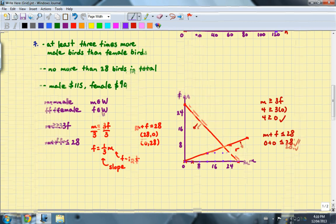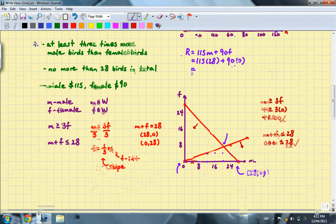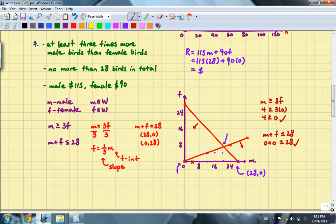And finally, it asks for the combination that would have maximized the pet store's revenue. You obviously want to sell as many of the male birds as you can possibly sell. So you have three corners, one here, one here, and one here. And the only one that really maximizes the number of male birds sold is this one right here. So we're going to sell 28 male birds and 0 female birds. Take a look at the objective function, which would have been R equals 115M plus 90F. I will plug in 28 and 0, which will give me the maximum revenue. And that's going to be $3,220.